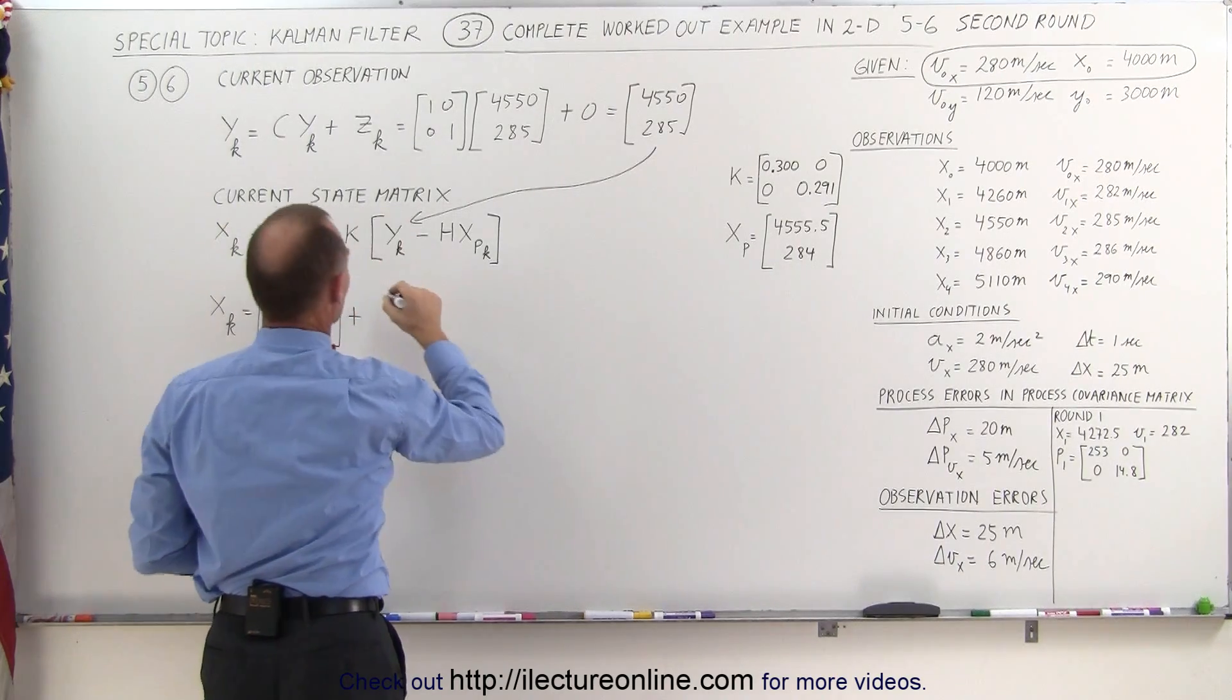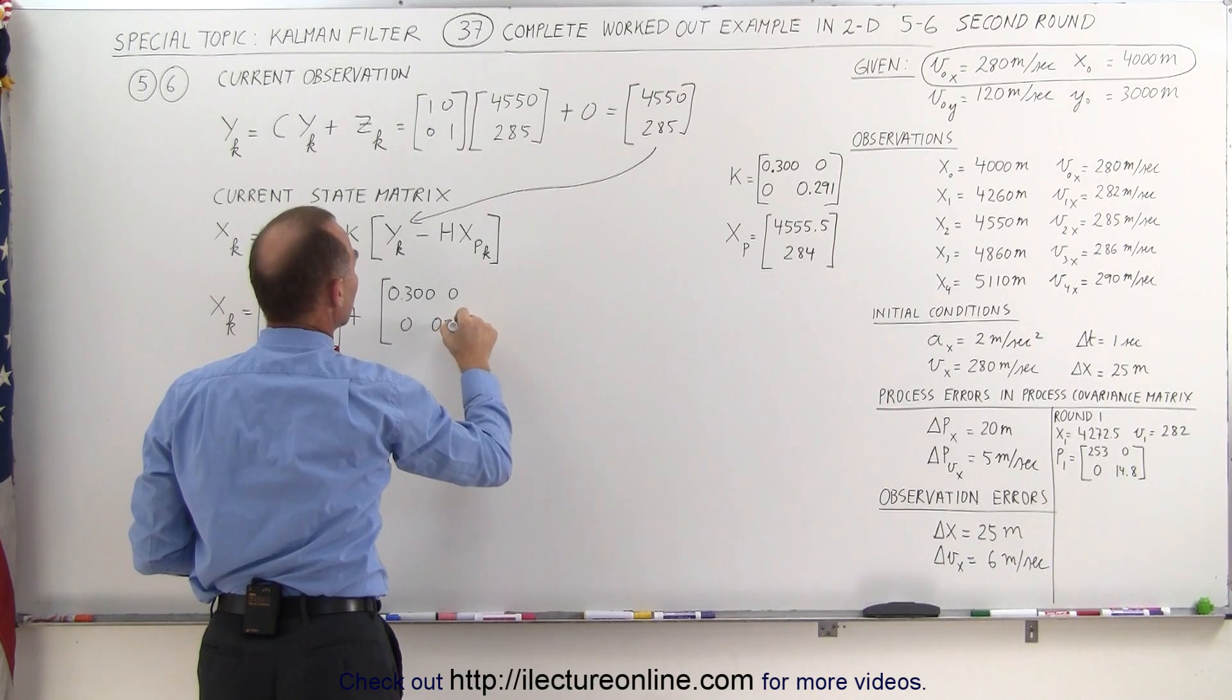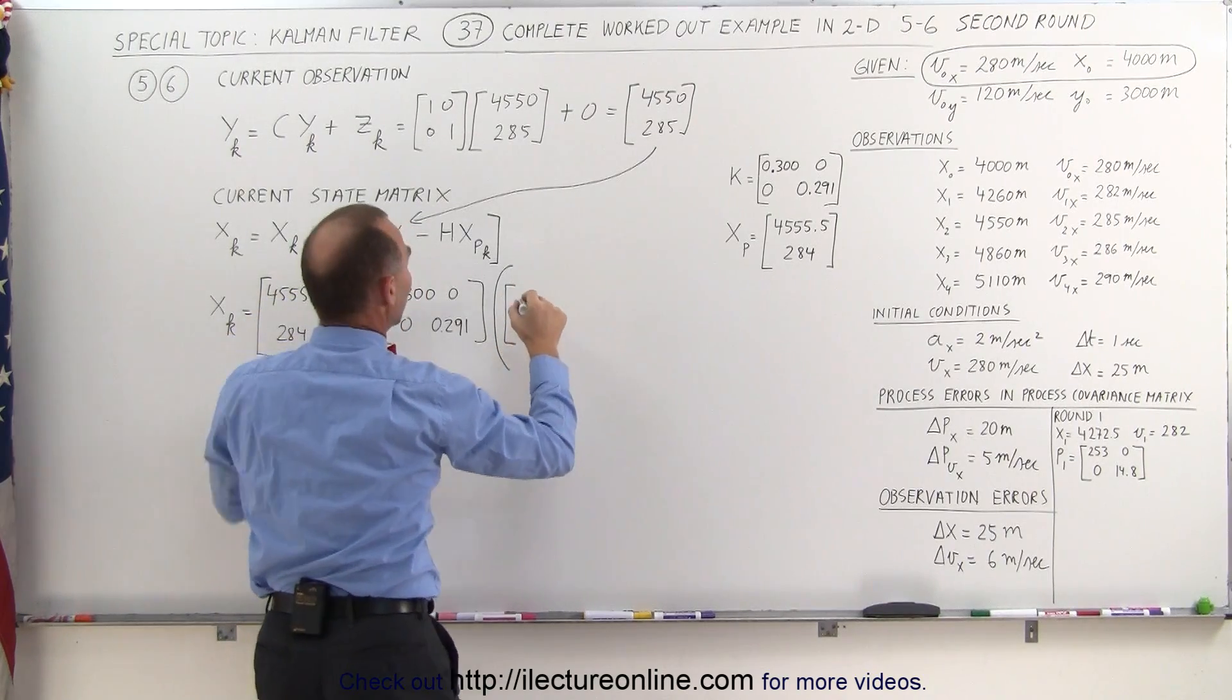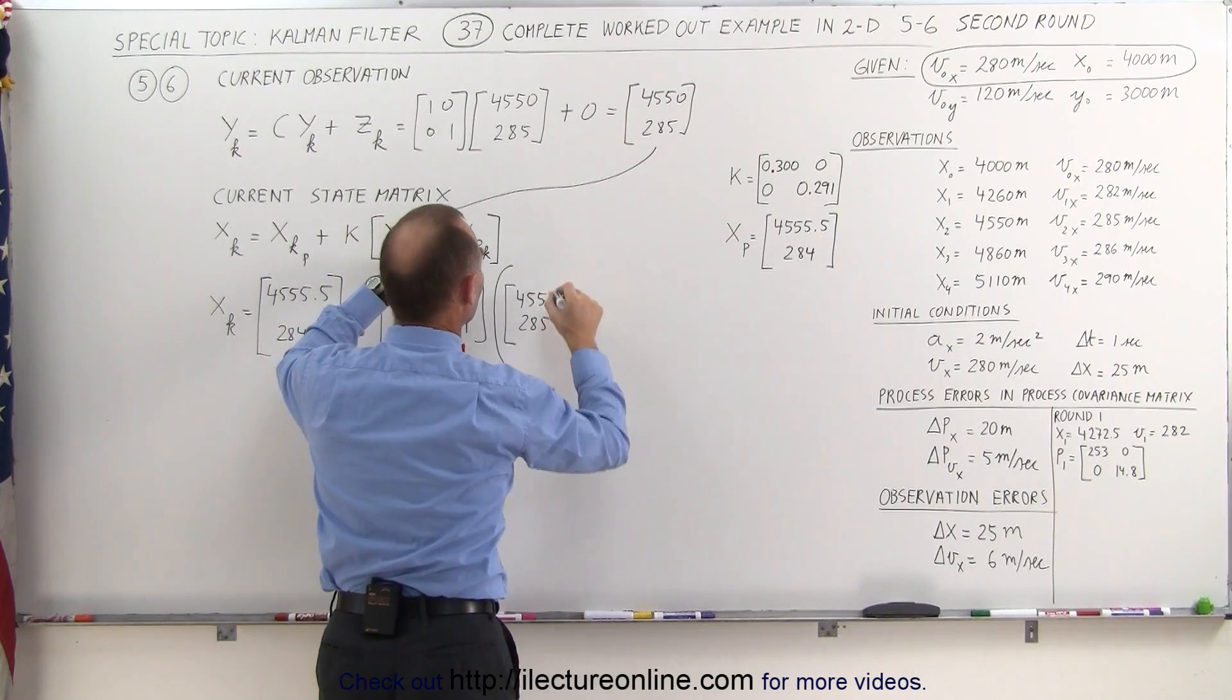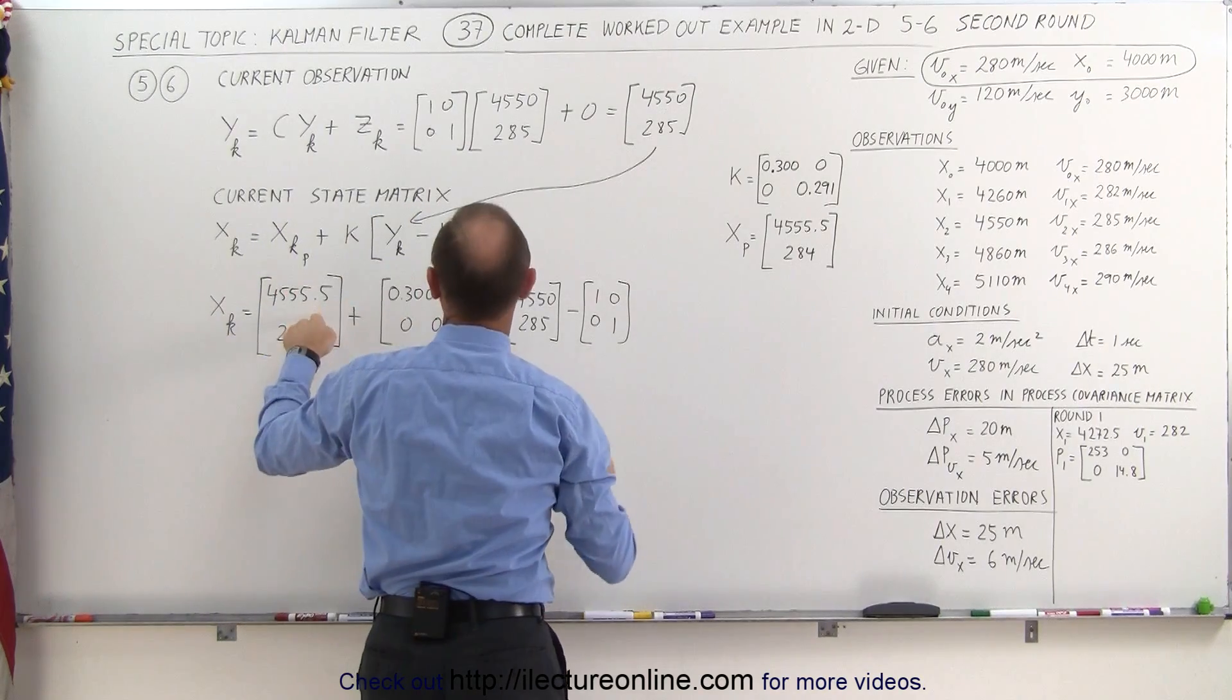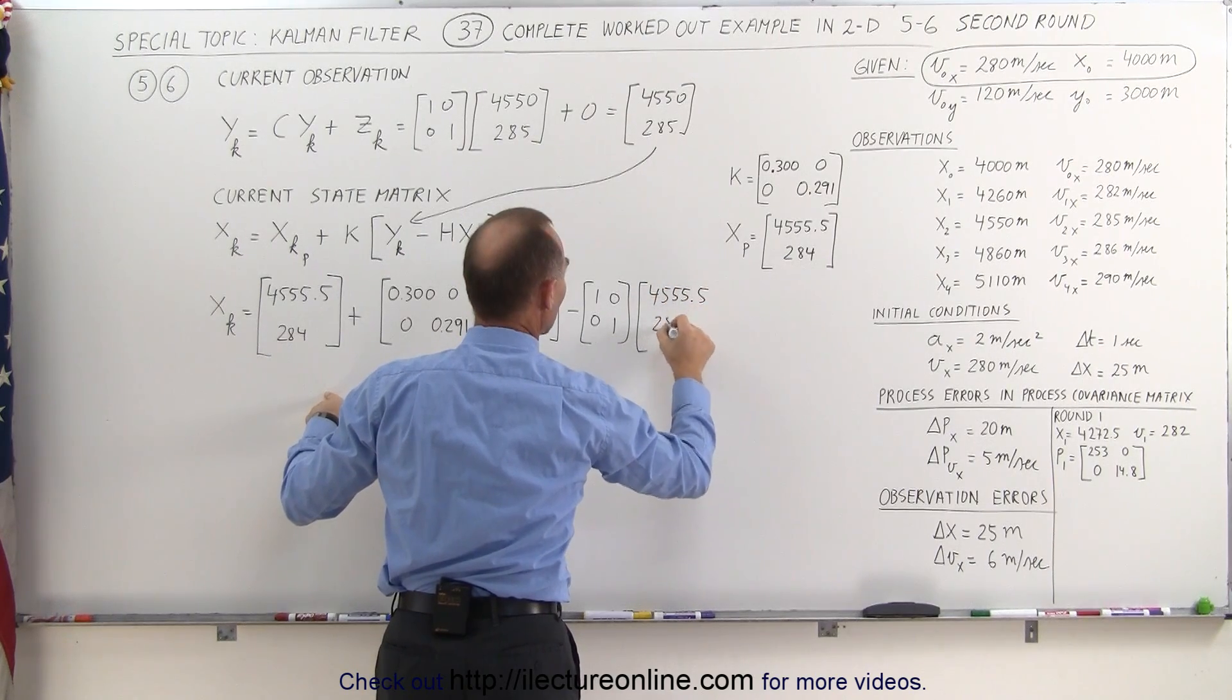We add to that the Kalman gain, which is this matrix right here, 0.300, 0, 0, and 0.291. And we're going to multiply that times the observation matrix, which we have as 4550, 285, minus the H matrix. Now, the H matrix, in this case, is still going to be the identity matrix times the predicted state matrix, which is this matrix right here, 4555.5 and 284.